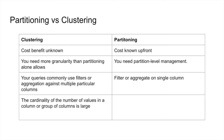Clustering is better when you need more granularity that partitioning cannot provide. With partitioning, you can do partition-level management — for example, deleting, creating, or moving partitions between storage — which is not possible with clustering. In clustering, you typically filter or aggregate on multiple columns, whereas in partitioning you filter on a single column, since partitioning is only possible on one column. You will also use clustering when the cardinality of values in a column or group of columns is large, since there is a limitation of 4,000 partitions per table.